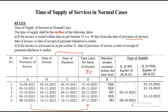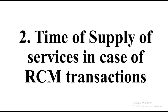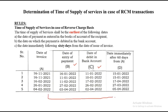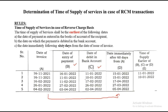Now for time of supply of service in case of RCM: we have the earlier of date of payment as entered in the book, date on which payment is debited in the bank account, and immediately 60 days from the date of issue of invoice. From the date of invoice, create another column with exactly 60 days ahead. Then compare columns B, C, and D — whichever is earlier is your time of supply. So: 16th Jan, 11th Jan, 15th Jan — 11th Jan is earliest. 11th Jan, 10th Jan, 15th Jan — 10th Jan is earliest. 11th Jan, 11th February, 17th February, 17th April — 11th February is earliest. 27th February, 26th February, 27th March — 26th February is earliest. 3rd April, 2nd April, 5th April — 2nd April is earliest.